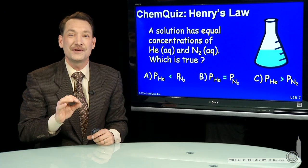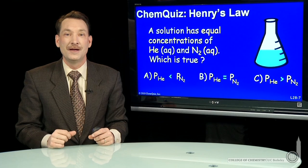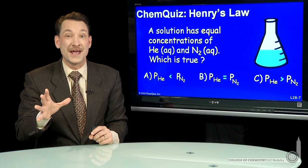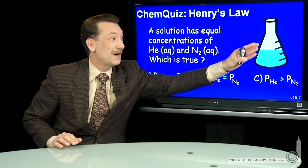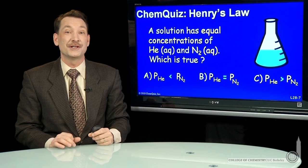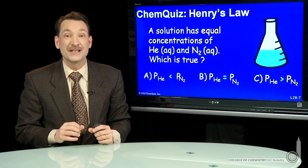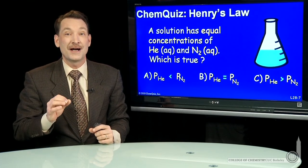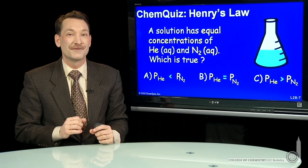We're talking about helium and nitrogen dissolved in solution. Their aqueous concentrations are the same, so what does that mean about their partial pressures above the solution? Well, to solve this, we need to look at the equilibrium constants—the Henry's Law constants for these gases.